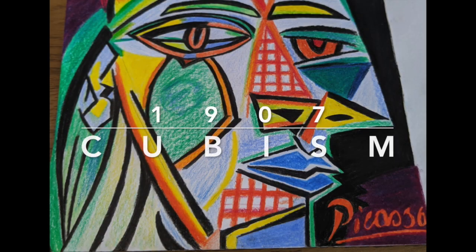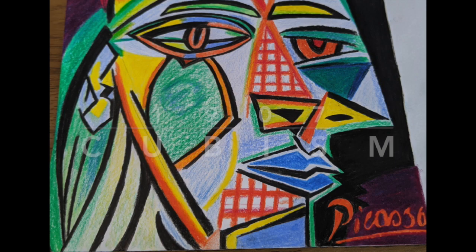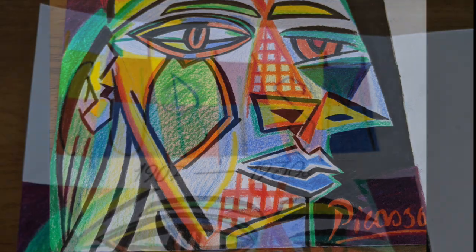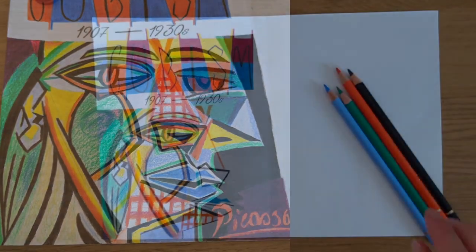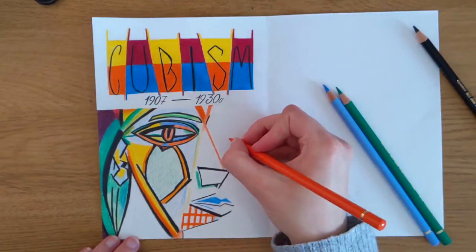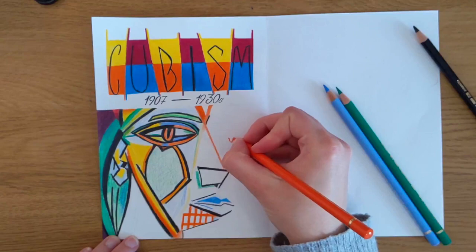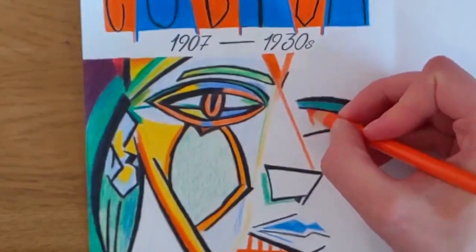Next we're moving on to cubism and again I want you to copy a piece of artwork from this time period. I've chosen one of Picasso's paintings called Woman in a beret and Czech dress. Once I'd sketched out my drawing I could then start to add the different colors.